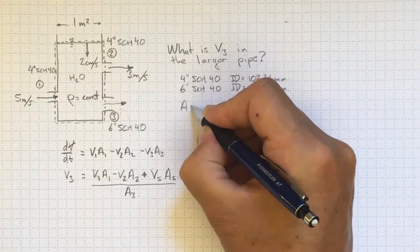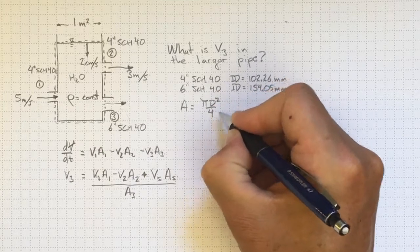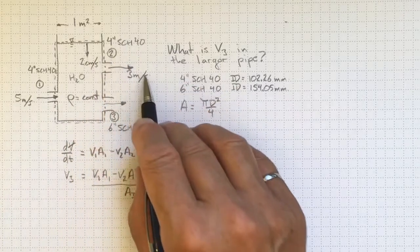So I can get the areas are equal to πd²/4, and I can put in the right areas for each of these. I know what the velocities are.